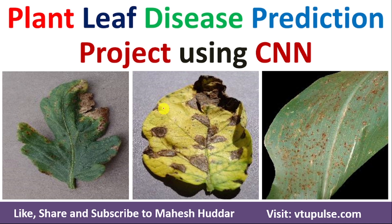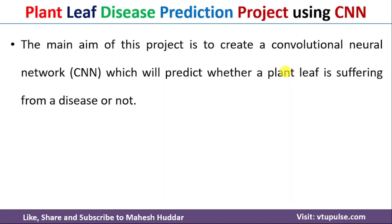Welcome back. In this video, I will discuss a plant-leaf disease prediction project using CNN. The main aim of this project is to create a Convolutional Neural Network — CNN — which will predict whether a plant is suffering from a disease or not.